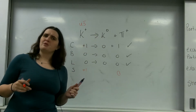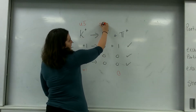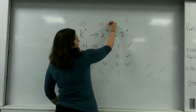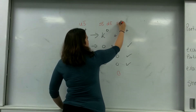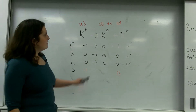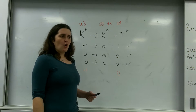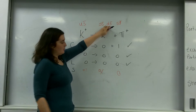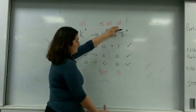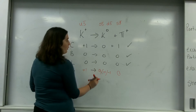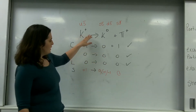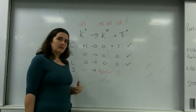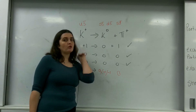This kaon naught can have multiple quark compositions: it could be strange anti-strange, giving strangeness of zero; it could be down anti-strange, giving strangeness of plus one; or it could be strange anti-down, giving strangeness of minus one. All of these are valid — I could have the kaon plus decaying to a strange anti-strange, a down anti-strange, or a strange anti-down kaon naught, and it will all be valid, as long as it was the weak interaction, because strangeness does not have to be conserved.